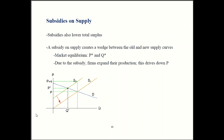Some intuition for why supply shifts out by the amount of the subsidy: to produce this many units, originally the supplier had to get this much money. Now once you subsidize supply, they only have to get this smaller amount because they get that amount plus the subsidy, which brings us back to where we started. So you shift supply down by the amount of the subsidy. The supplier no longer relies upon price alone to get their money — they have the price plus the subsidy.